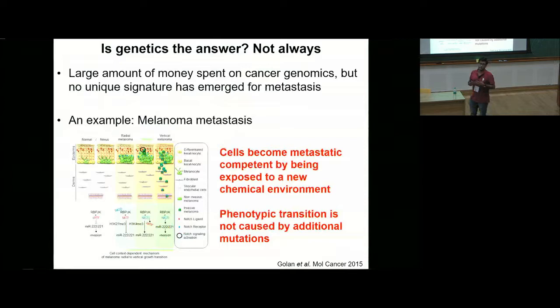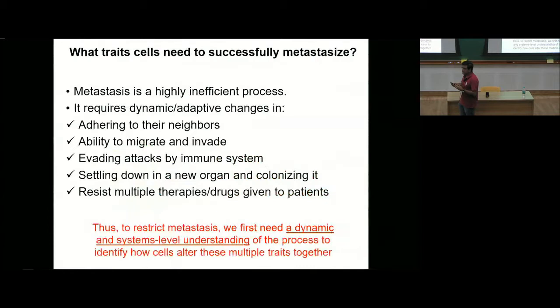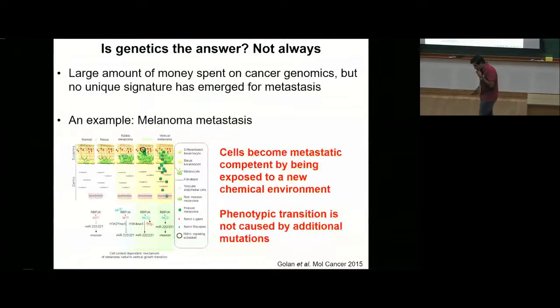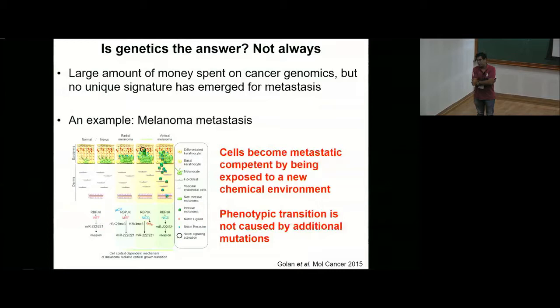One way to think about this process is the way cancer biologists have thought about it for a long time: mutations — irreversible genetic changes which are completely heritable. Once the DNA sequence changes it cannot be reversed. But as we just saw, metastasis requires very dynamic adaptability — a plasticity, going back to what Ganesh was talking about — phenotypic plasticity of switching back and forth. At some time cells have to gain a feature, at another time lose it. It's not surprising therefore that so far no unique mutational signature has been identified for metastasis, even though mutational signatures have been identified for multiple other hallmarks of cancer.